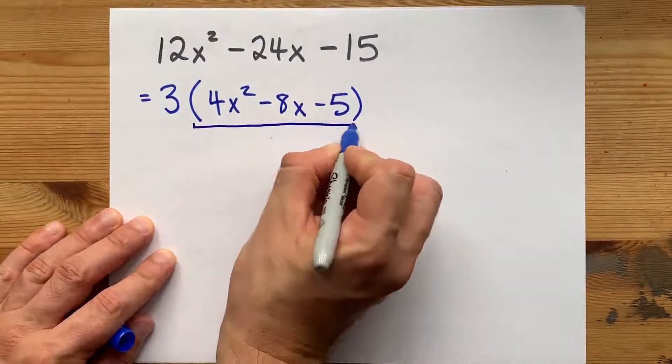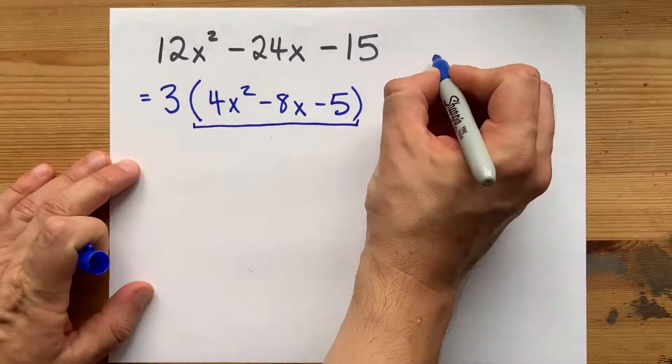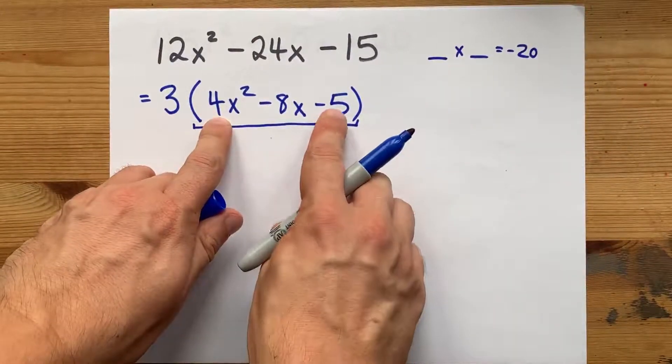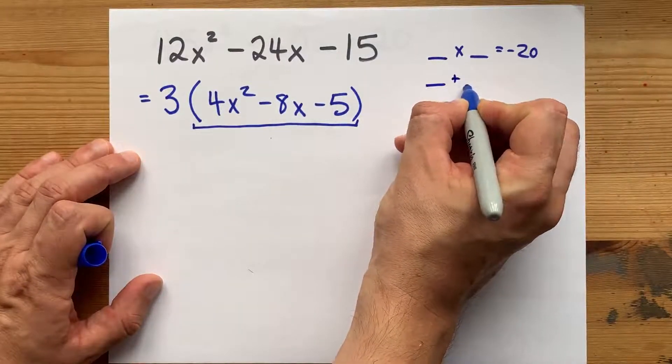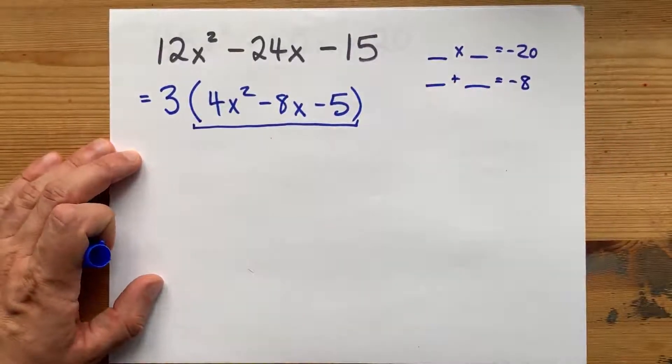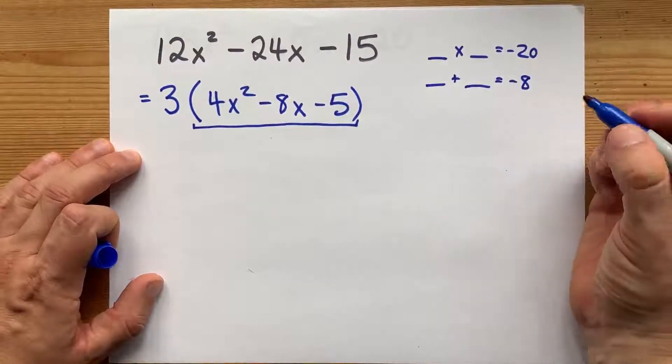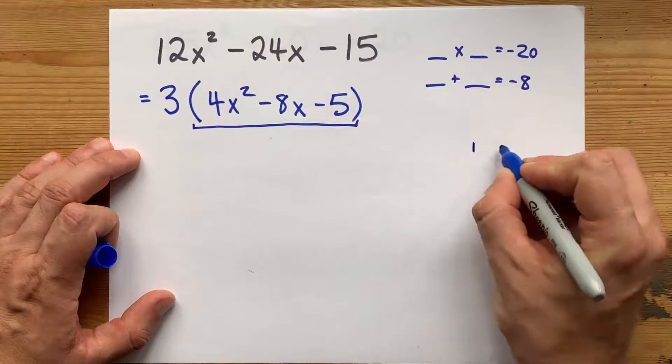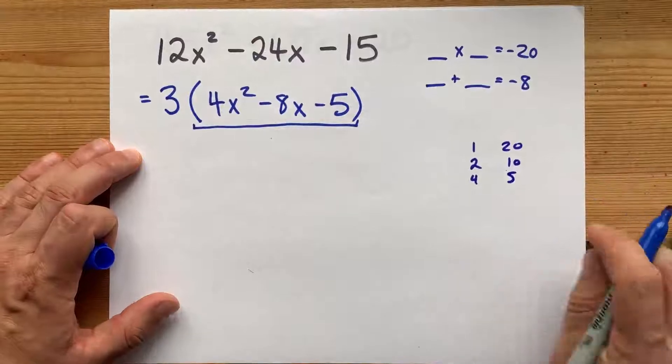Now, this is what I'm going to decompose. Now, I'm looking for two numbers that multiply to just negative 20. See? 4 times negative 5. And those same two numbers have to add to give you negative 8. Now, those we can deal with, right? They're smaller. Well, smaller than 180, at least. Numbers that multiply to 20. Let's see. We got 1 and 20. We got 2 and 10. We got 4 and 5. And I think that's it.